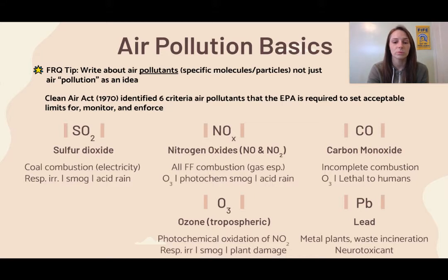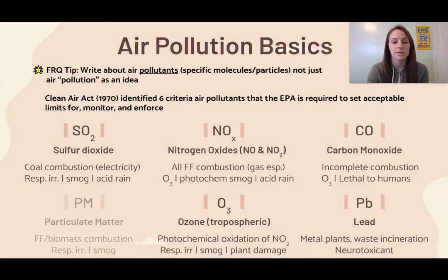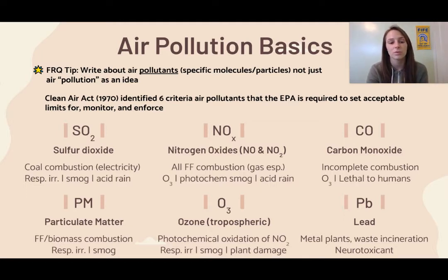Then we have ozone, which is tropospheric — occurring in the tropospheric level. Ozone is a problem because it is a photochemical oxidation of nitrogen dioxide, and we'll talk more about photochemical processes in future notes. It causes respiratory irritation, creates smog, and can be damaging to plants. The last one is particulate matter, which occurs from any type of fossil fuel or biomass combustion, and can lead to respiratory irritation and smog.